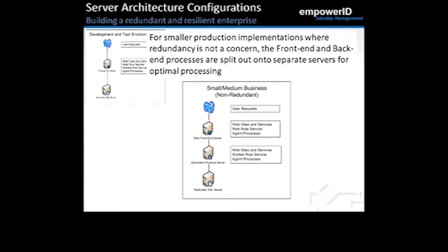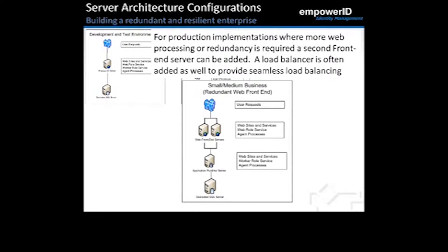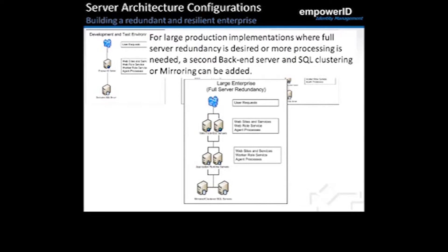For smaller production implementations where redundancy is not a concern, the front-end and back-end processes are split onto separate servers for optimal processing — the typical recommended approach so that front-end user interface processes are not impacted by the long-running and spiking processes on the back-end worker role server. For implementations requiring more web processing or redundancy, a second front-end server and load balancer can be added for seamless load balancing.